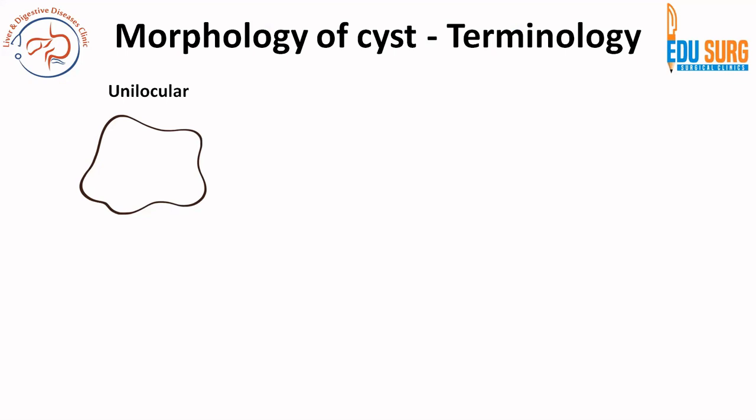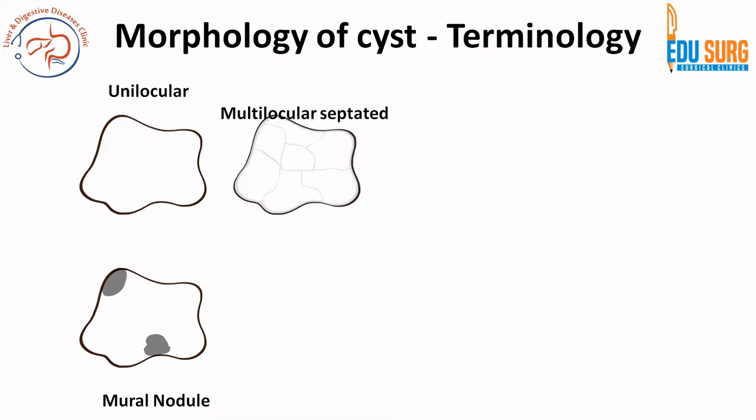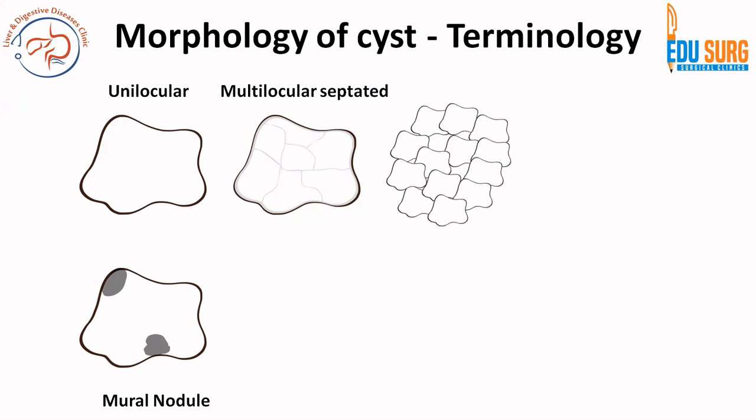When you see a single cyst — a cyst is a fluid-filled structure, epithelial or non-epithelial as seen in the previous video — that type is unilocular. If there is a nodule inside that unilocular cyst, it is a unilocular cyst with a solid component or mural nodule. The solid part inside a cyst is known as a mural nodule. A cyst divided by septas into loculi is a multilocular septated cyst.